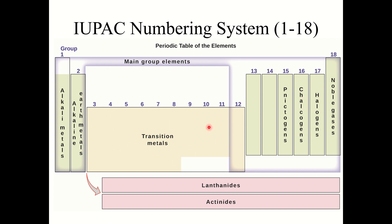The transition metals are in the middle. That two-row offset you see at the bottom is called the lanthanide-actinide series — these are the F-block elements. The group names you should definitely know are groups 1, 2, 17, and 18. Group 1 is the alkali metals, Group 2 is the alkaline earth metals, Group 17 or 7A are the halogens, and Group 18 or 8A are the noble gases.